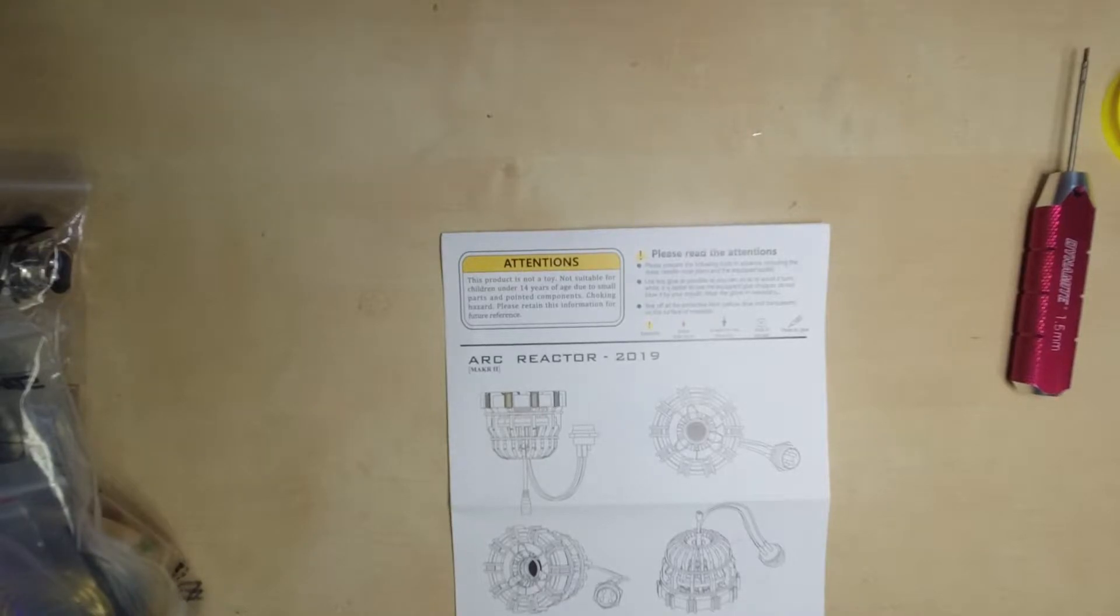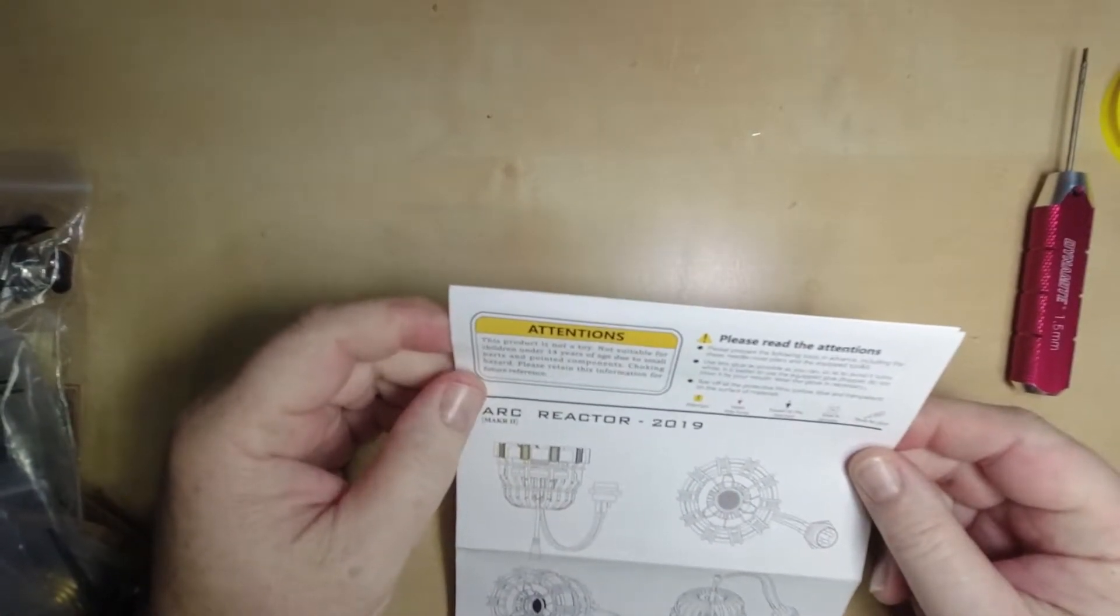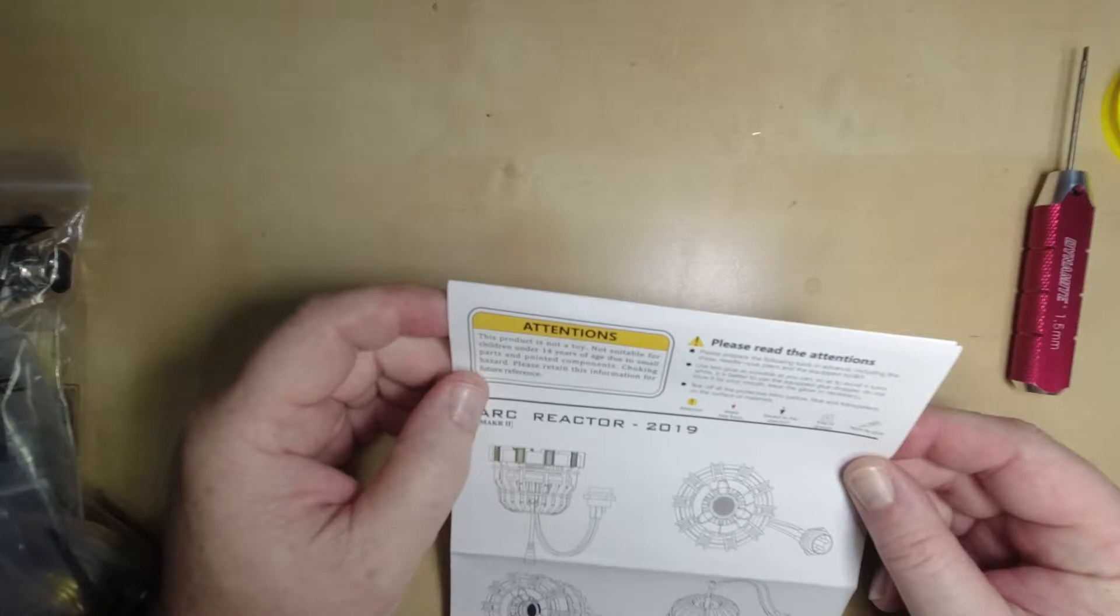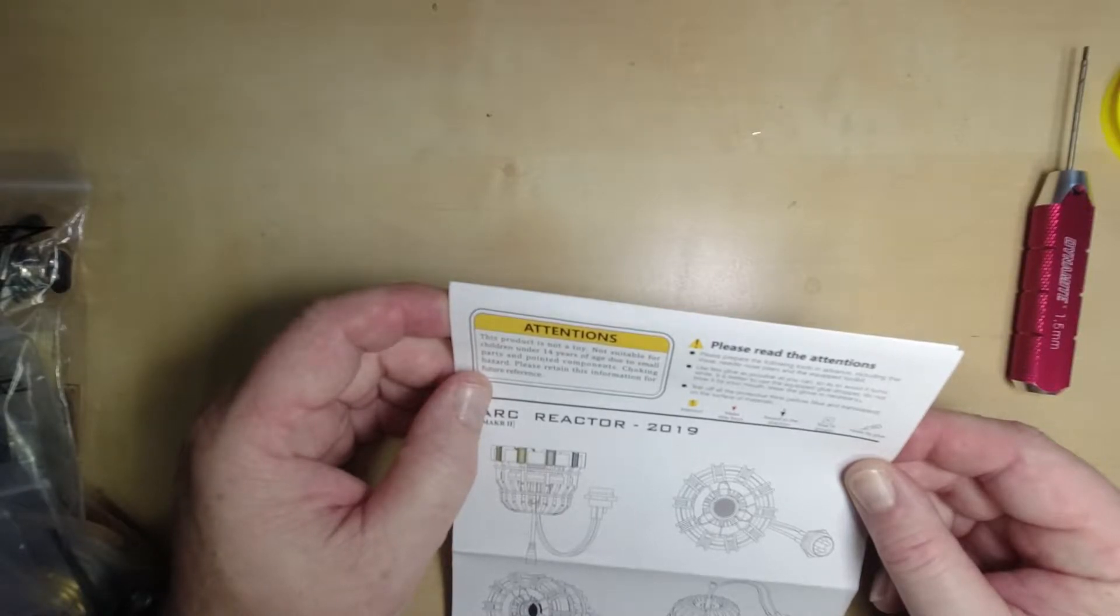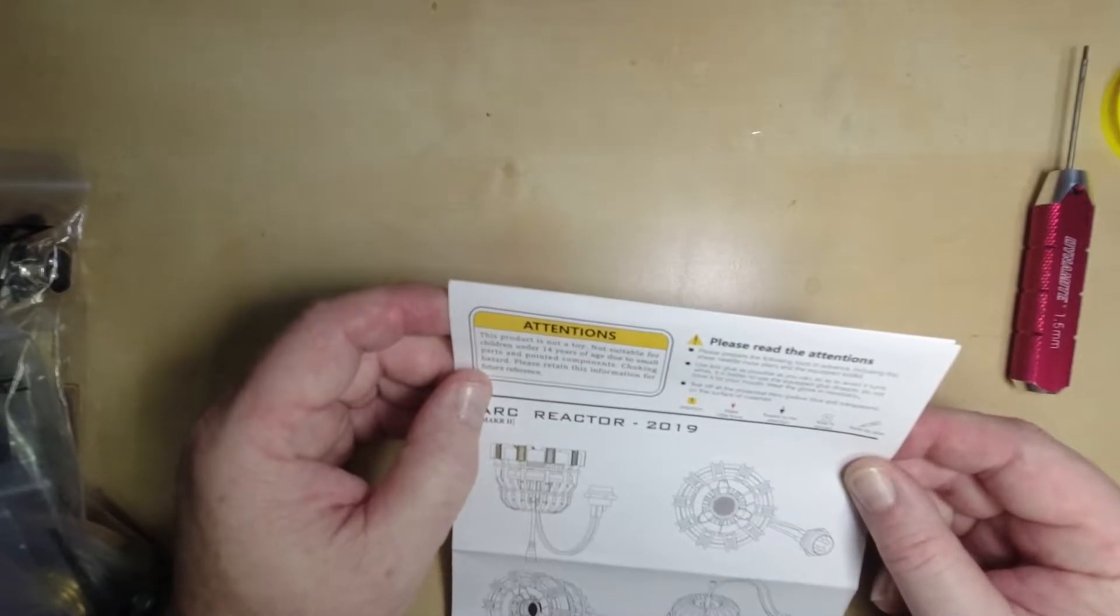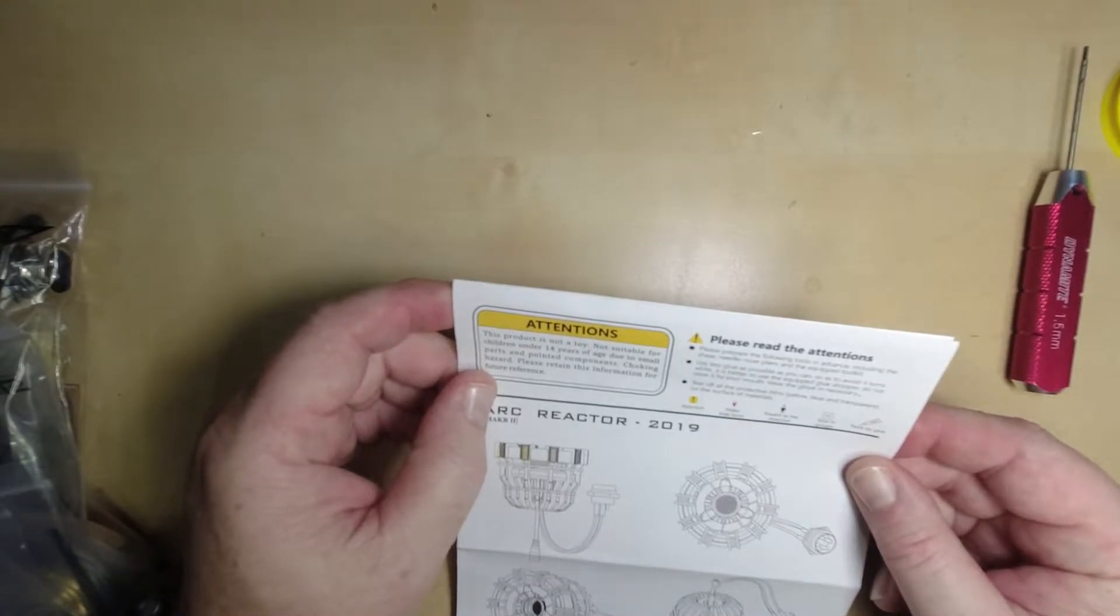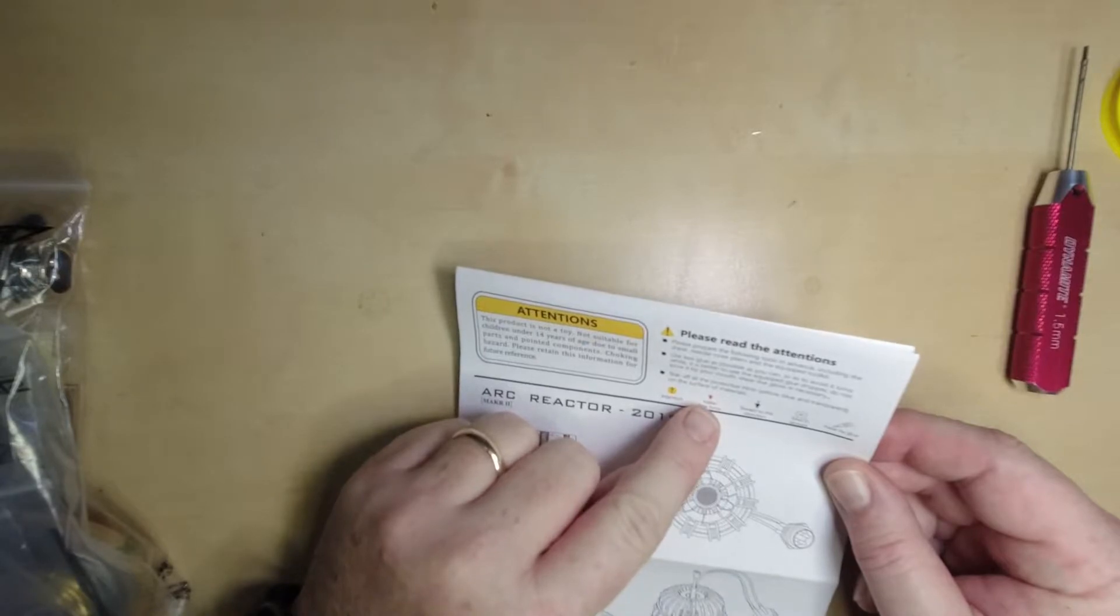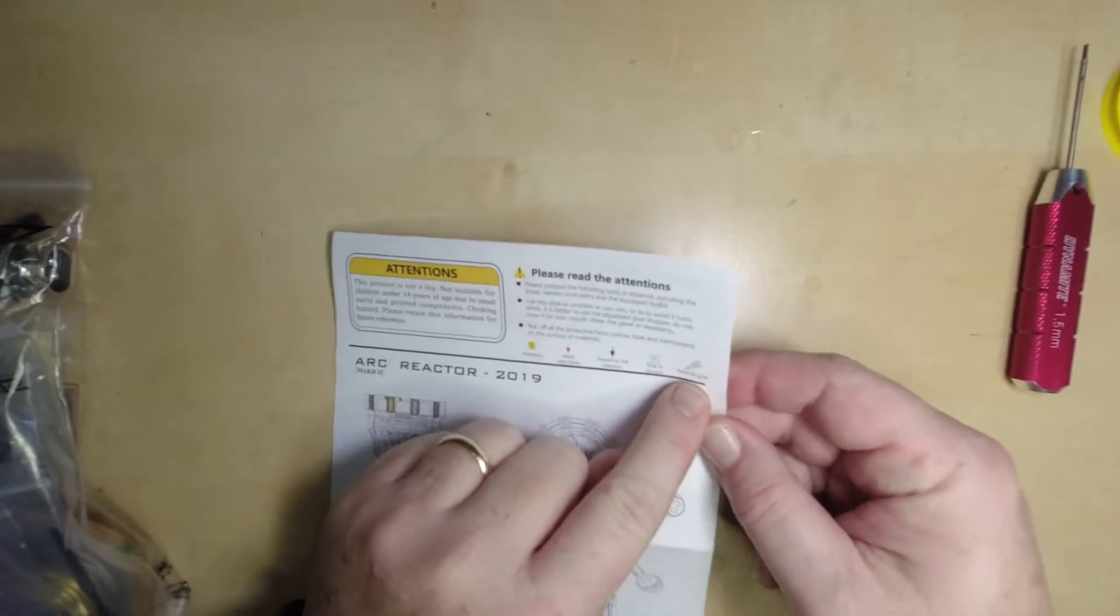It says, please read these attentions. Not a toy. Please prepare the following tools in advance including the shear, needle nose pliers, and the equipped tool kit. Use less glue as possible as you can so to avoid it turns white. It is better to use the equipped glue dropper. Do not blow it by your mouth. Wear gloves. Tear off all the protective PLMs. Yellow, blue, and transparent on the surface of materials. You gotta love this chinglish. Attention. Make little force. It says, toward to the direction.